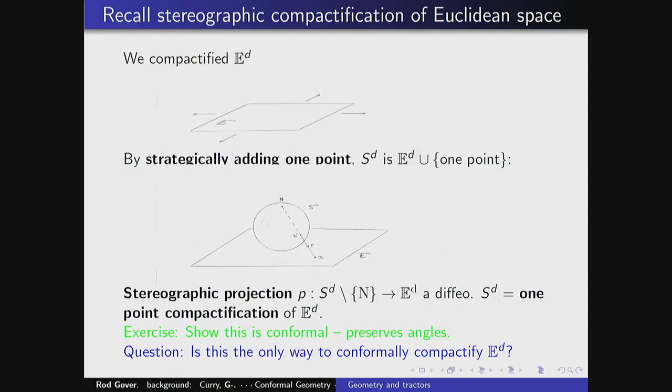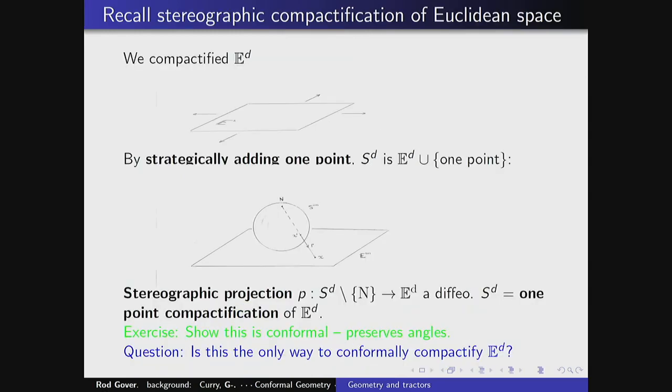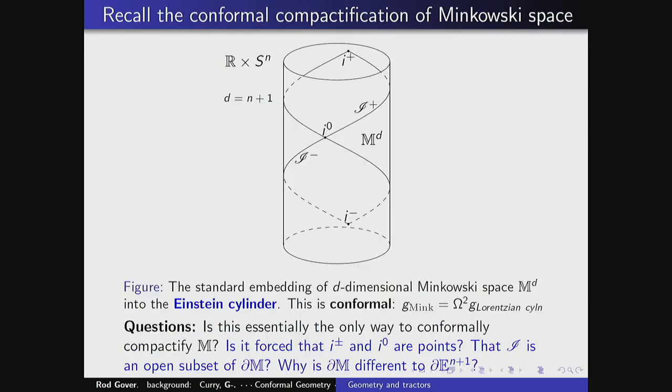Here's the picture you saw before — we compactified Euclidean space by just adding one point. I gave you that exercise showing this is conformal, so it preserves angles. There was the question of whether that was the only way to compactify Euclidean space. Then we looked at this compactification of Minkowski space. Minkowski space looks the same but has a different metric on it, and when you conformally compactify it, you get a different sort of boundary.